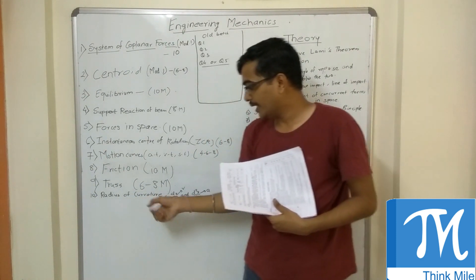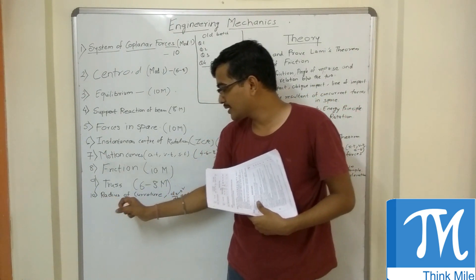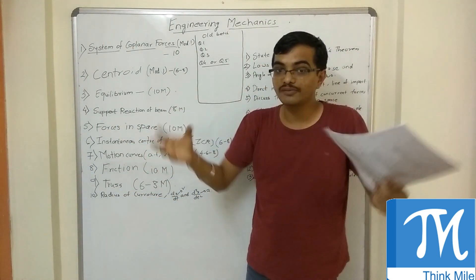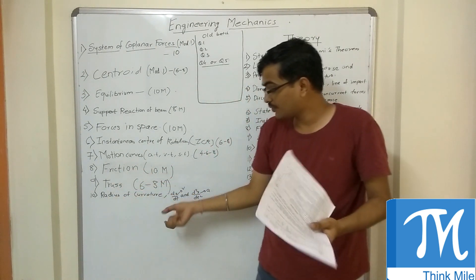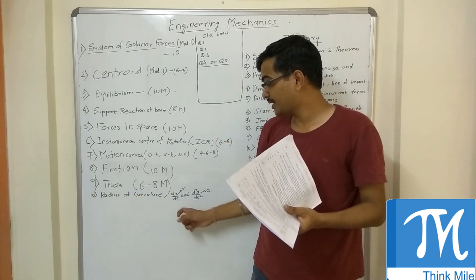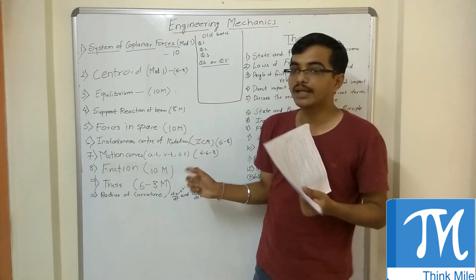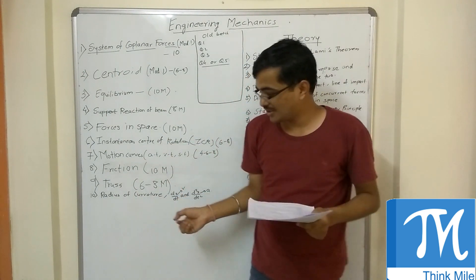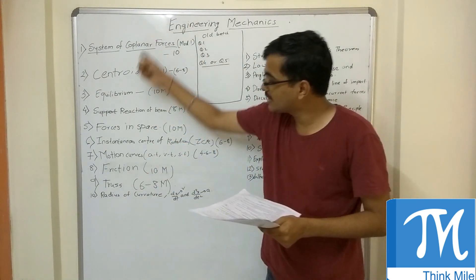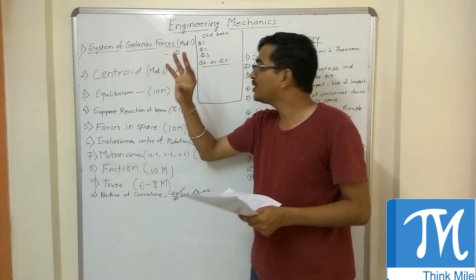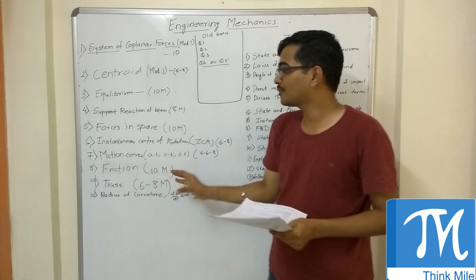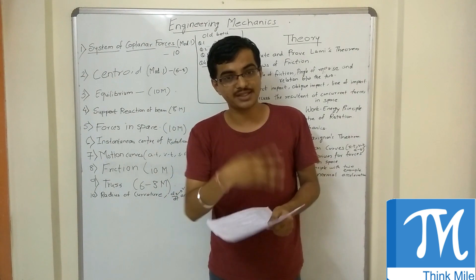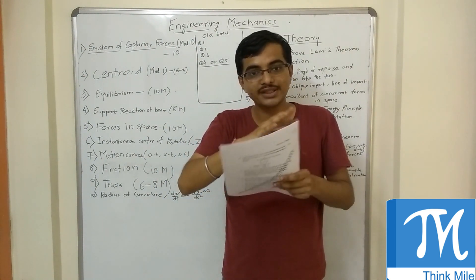There is one more topic in kinematics. A question on radius of curvature, or dx/dt and dx/dt² — that is velocity and acceleration — to find the acceleration or velocity is generally seen in the paper. These are the best fixed questions. I have tried to cover only those topics which are simple and which students can do easily.